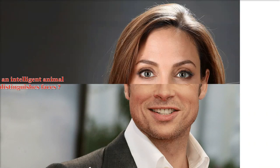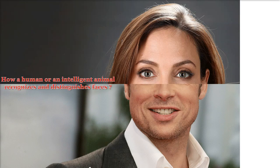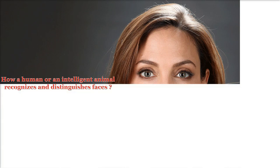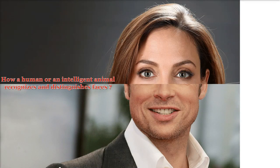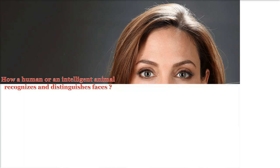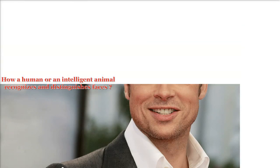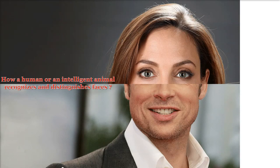Have you ever thought how a human or an intelligent animal recognizes and distinguishes things? When the eyes are open, visual information flows from the retina through the optic nerve and into the brain, which assembles this raw information into objects and scenes.